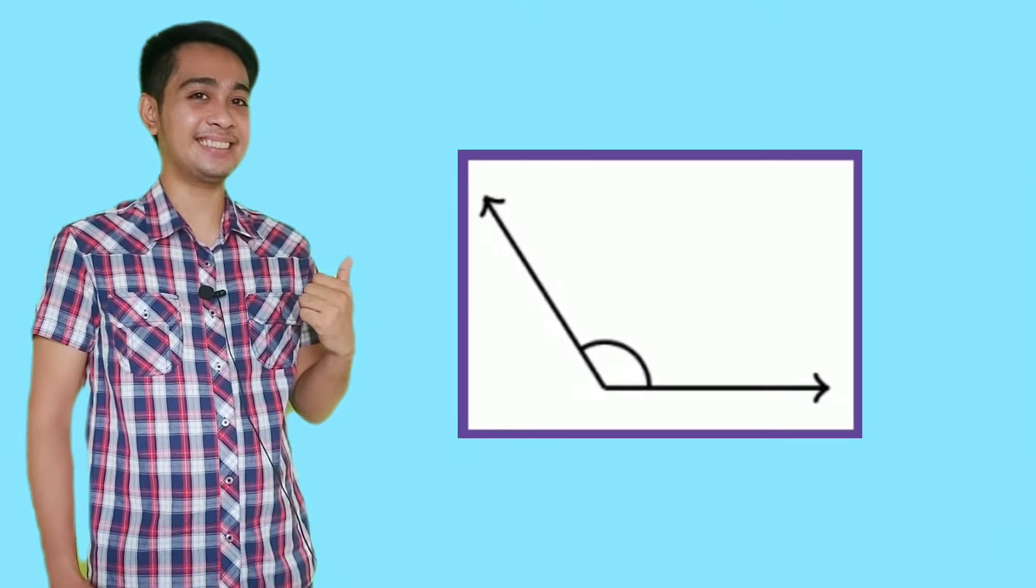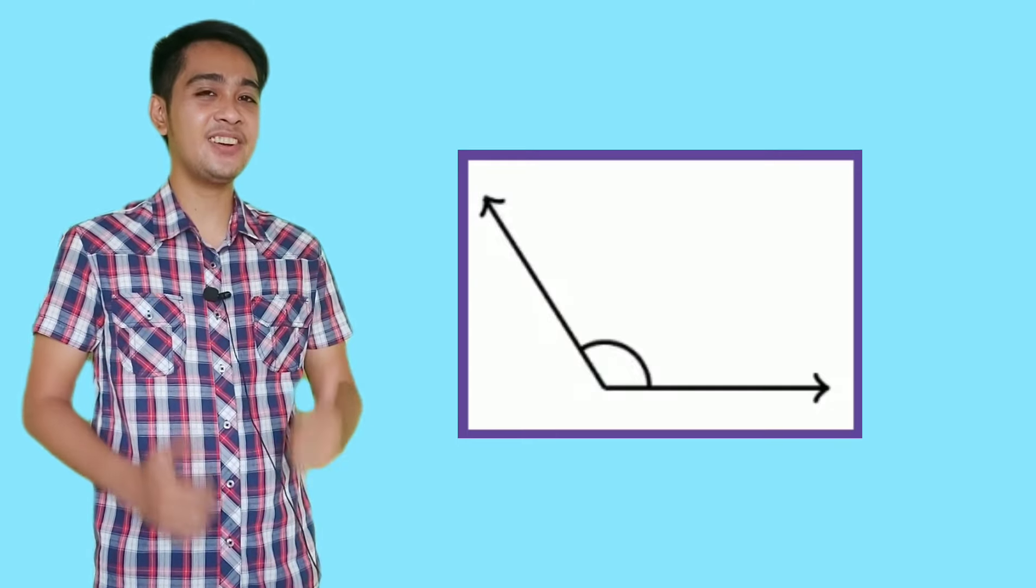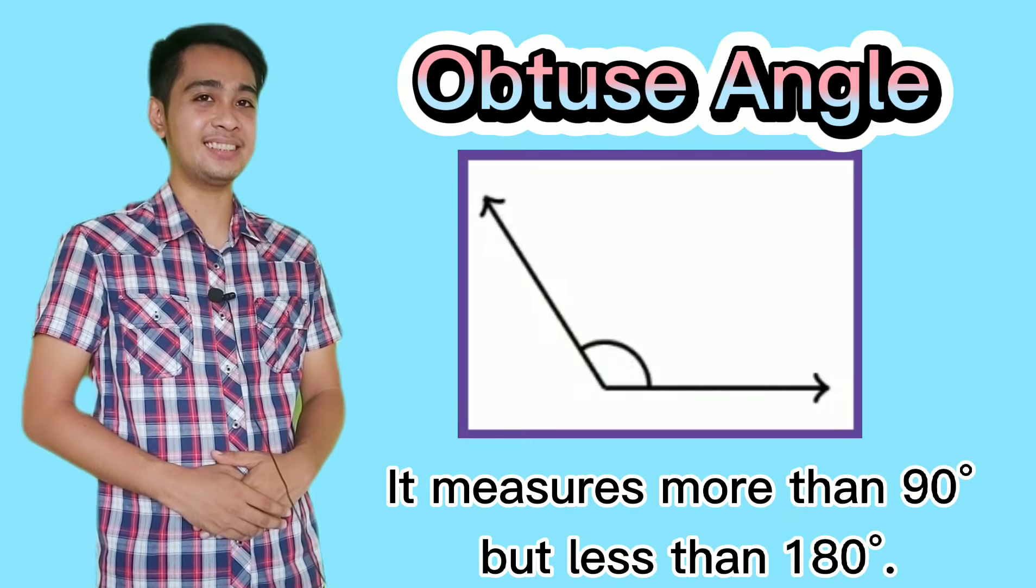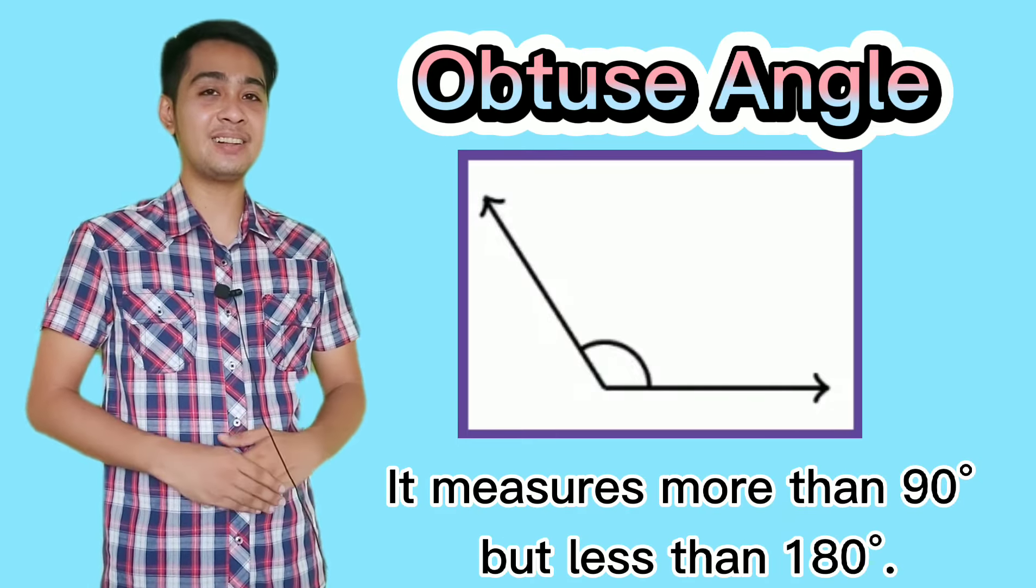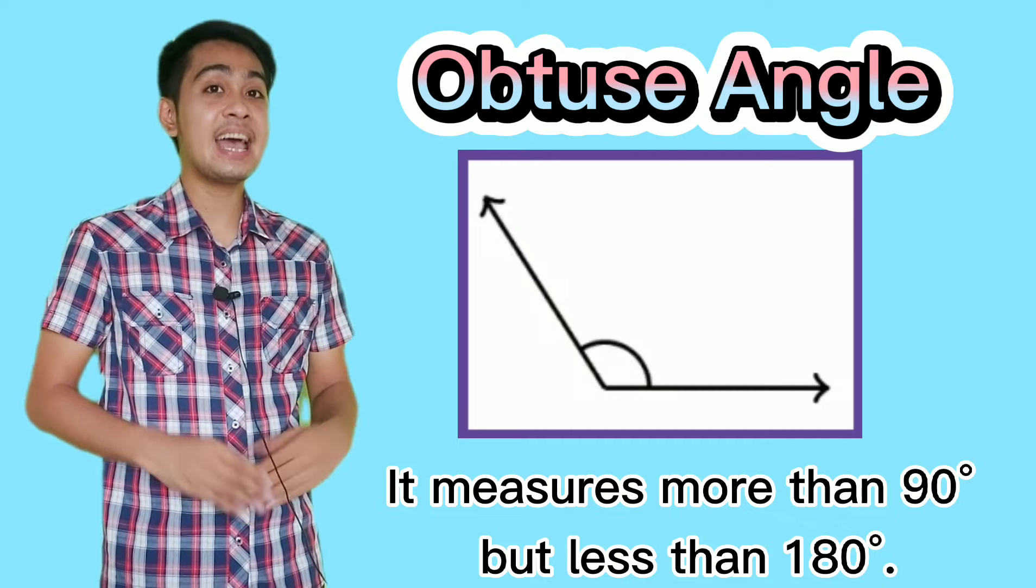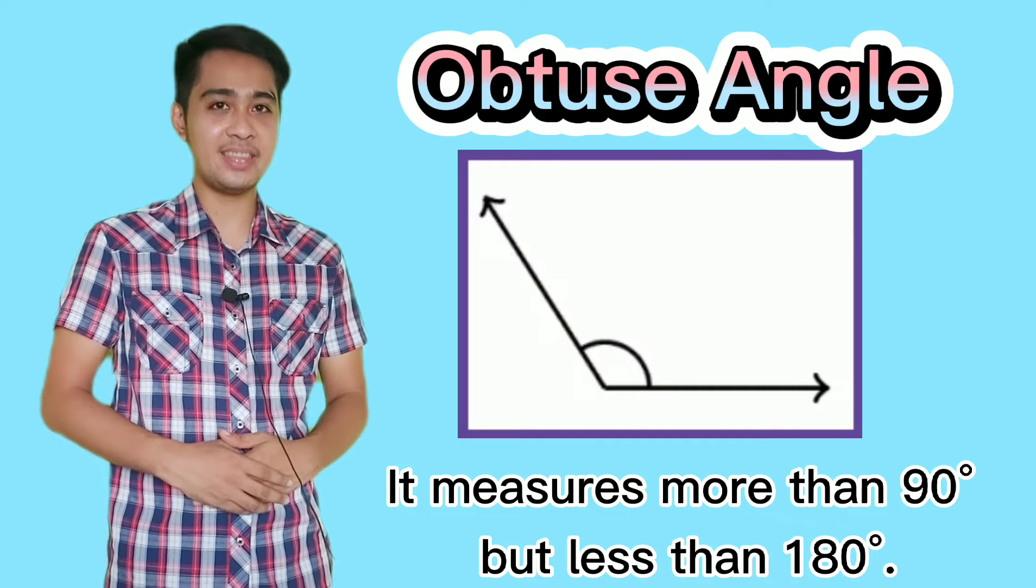How about this angle? Very good. It's an obtuse angle. An obtuse angle measures more than 90 degrees and less than 180 degrees.